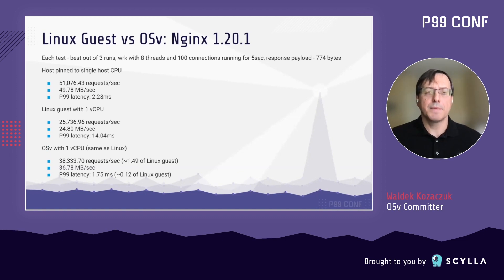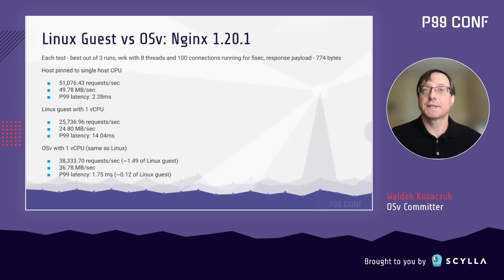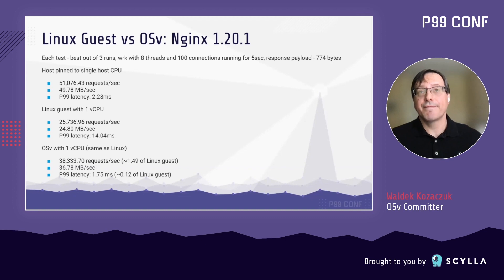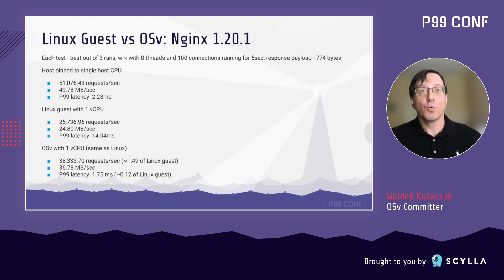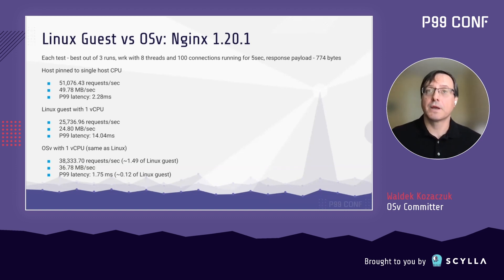In the first experiment, I measured performance and latency of NGINX. Because OSV supports a single process by design and an NGINX worker is a process, it only makes sense to run this test with one vCPU and NGINX configured to run as a single worker. I ran a five-second load test three times and selected the best result, with wrk generating load using eight threads and 100 concurrent connections. OSV outperformed the Linux guest by almost 50% in terms of throughput and 88% shorter p99 latency.